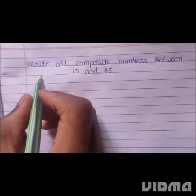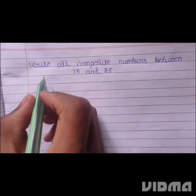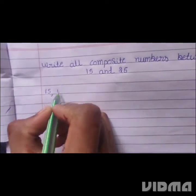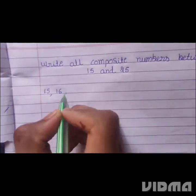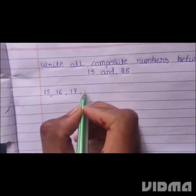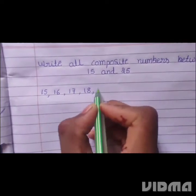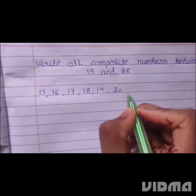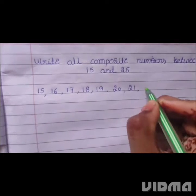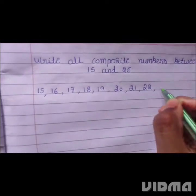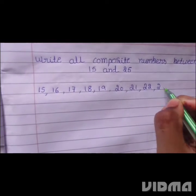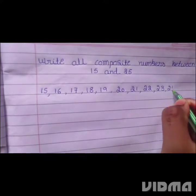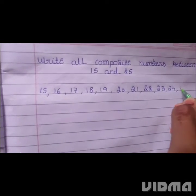First we have to write numbers 15 to 25: 15, 16, 17, 18, 19, 20, 21, 22, 23, 24, 25.